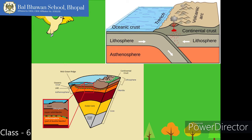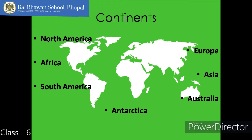There are two major divisions of the Earth's surface: the continents and the ocean basins. The huge land masses on the Earth are called continents. There are seven continents and all of them are separated by large water bodies.